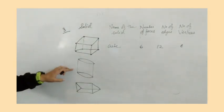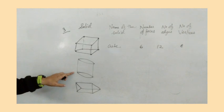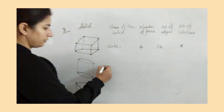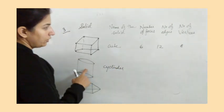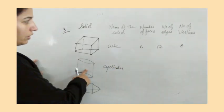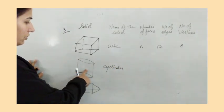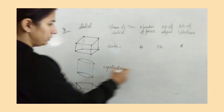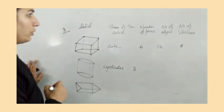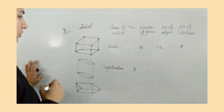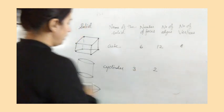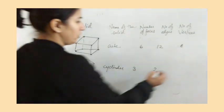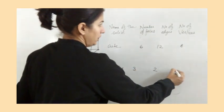So in a cube we have six faces, twelve edges, and eight vertices. Now what is the name of this figure? This is a cylinder. In the cylinder, the number of faces is three, the number of edges is two, and there are no vertices — zero.